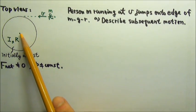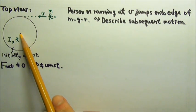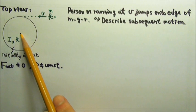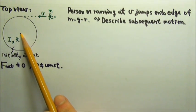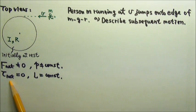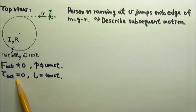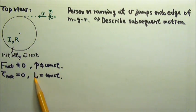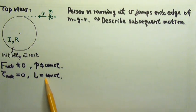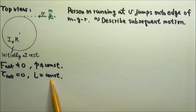However, whatever extra force comes from the axle would produce zero torque, because the lever arm is zero. Therefore, the net torque on the system is zero. So the person-merry-go-round system's angular momentum is conserved.